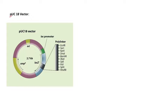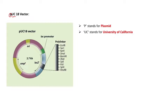What does the word 'p' in PUC18 mean? The small 'p' stands for plasmid, meaning this is a plasmid vector. The next two letters, 'UC', stand for University of California, which is the institution where this vector was first synthesized artificially. The number '18' distinguishes this plasmid vector from other plasmid vectors developed in the same lab.